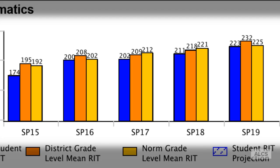If we look closely at this chart, we can see five different sets of data. At the bottom you'll see them labeled SP15 through SP19. What this refers to is the season and the year that these tests were taken — five different tests taken in the spring of 2015 all the way through the spring of 2019.